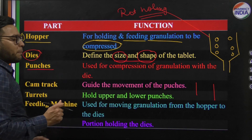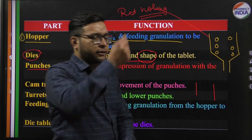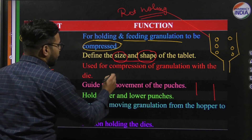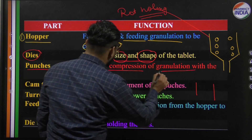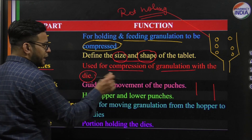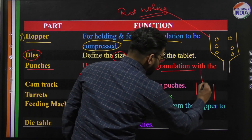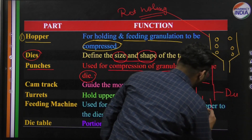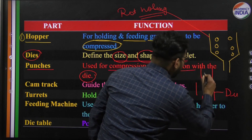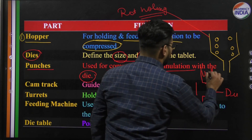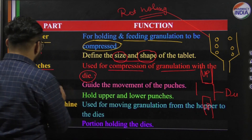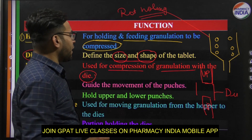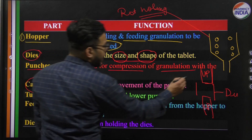Next is the punch — there are two punches: upper punch and lower punch. Compression occurs when the punches compress the granules within the die. Next is the cam track, which guides the lower punch movement.